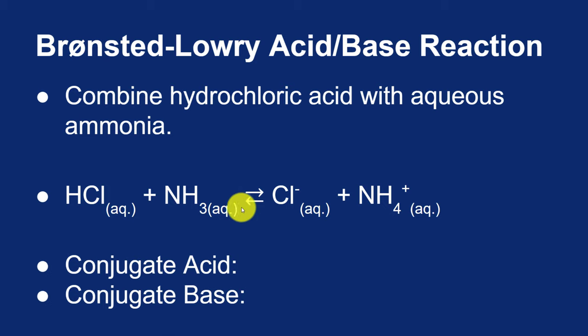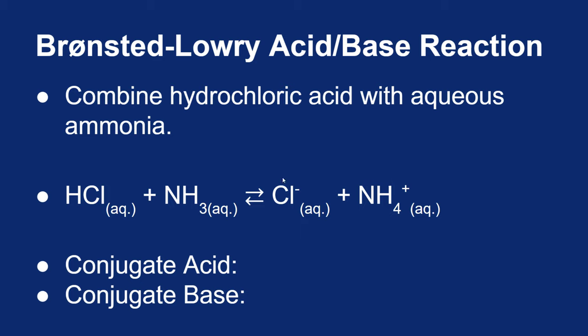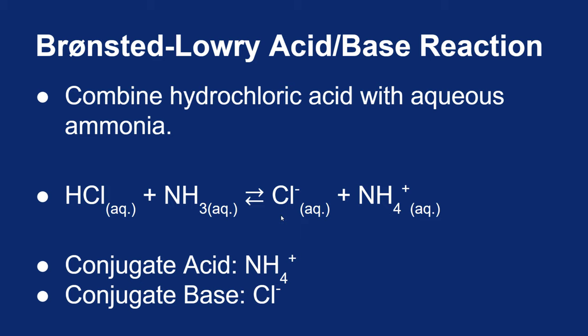We also highlighted the double arrow, showing how some of these reactions can go forward and some can go in reverse. In the reversed reactions, we look at what are called conjugates — a conjugate acid and a conjugate base. For this reaction to reverse itself, we have to move the proton back where it came from. The NH4+ would give up a proton to the Cl minus to make HCl and NH3 again. So NH4+ would be donating a proton — that would be an acid — and Cl minus would be accepting a proton — that would be a base. The acid and base in the reverse reaction are called conjugates: the conjugate acid is NH4+, and the conjugate base is Cl minus.